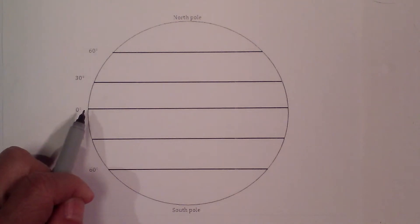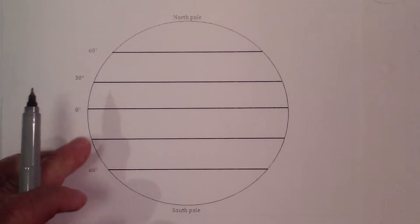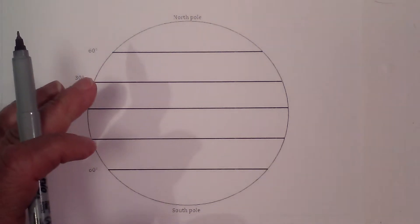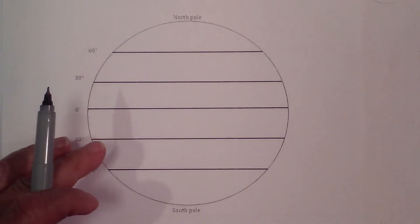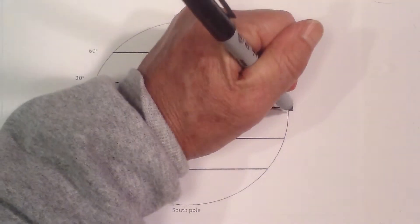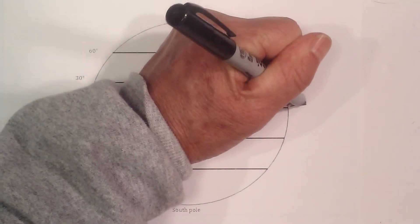The equator is very warm. Keep this in mind, warm air rises and creates low pressure. Cold air sinks and creates high pressure. So at the equator, air begins to move upward.